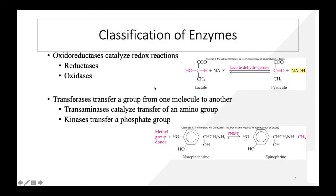Transferases help in transfer of specific functional groups from one molecule (donor) to another (receptor). Examples include kinases and transaminases. Kinases help in transfer of phosphate groups — phosphorylation. For instance, PNMT enzyme transfers a methyl group from a methyl group donor to norepinephrine, converting it to epinephrine.